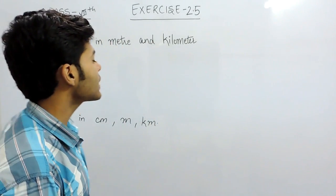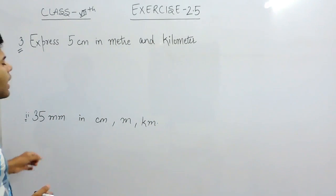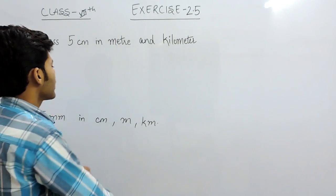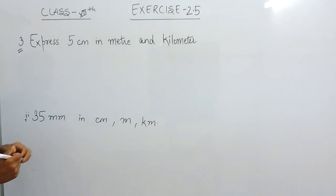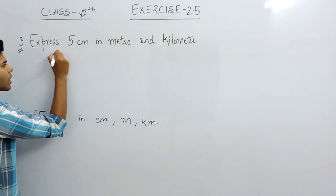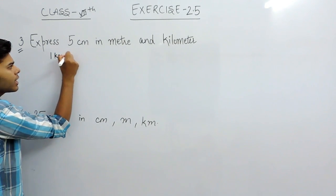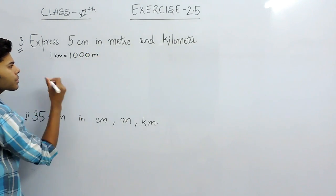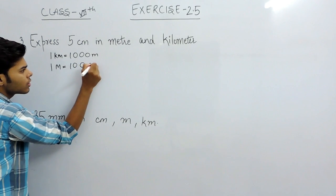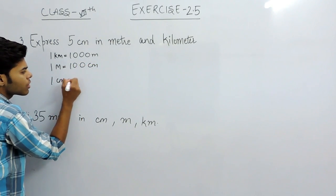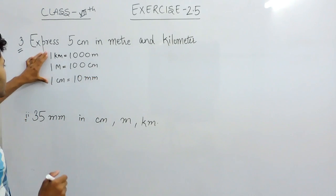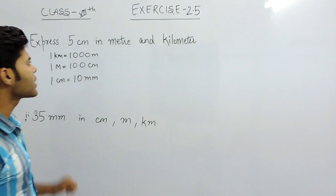Hello students. Now we will solve the third question of exercise 2.5, and in this question we only have to convert a particular unit into another unit. So first of all I am writing the relations that we will use in this question. 1km is equal to 1000m, 1m is equal to 100cm, and 1cm is equal to 10mm. So these are the relations and now we will use these relations to solve this question.